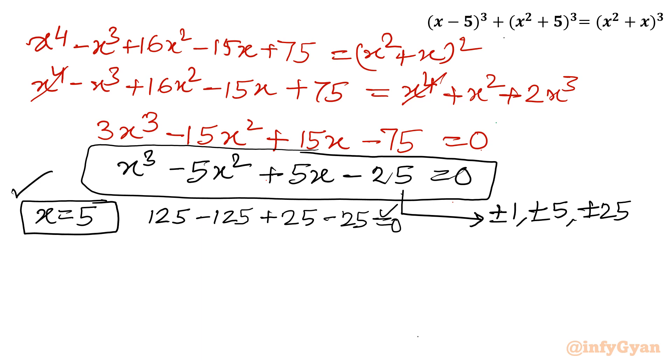Now I will use synthetic division method. Easy and simple one. Let me write all the coefficients: coefficient of x³ is 1, coefficient of x² is -5, coefficient of x is 5, constant is -25. Then I will put one line over there. Leading coefficient as it is: 1. Now 5, 0, 0, 5, 5, 25, 0. These are the coefficients of quadratic equation.